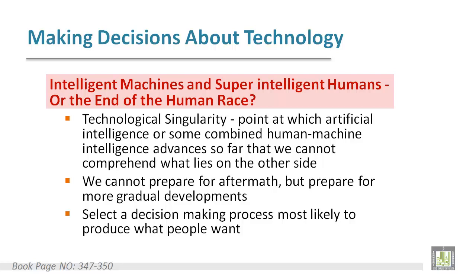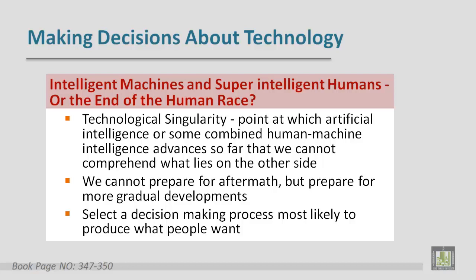Intelligent machines and super-intelligent humans — or the end of the human race? Intelligent machines mean there are super-intelligent humans. In this regard, technological singularity means the point at which artificial intelligence, or some combined human-machine intelligence, advances so far that we cannot comprehend what lies on the other side. The preparation should be for developments in the future, not for something already happened.